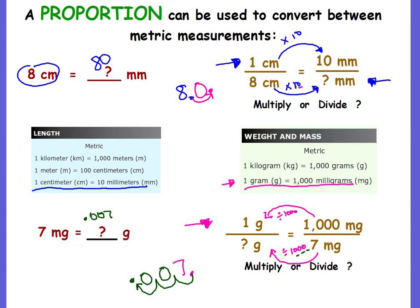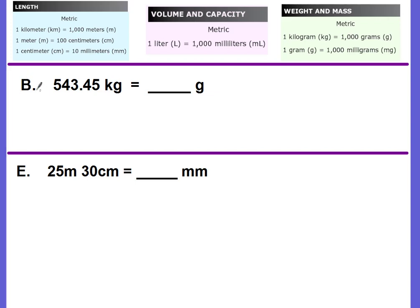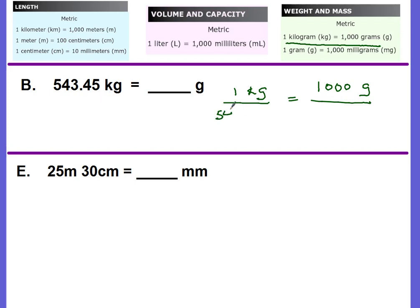Let's do some practice. We're converting kilograms to grams — that's under mass. Which one is larger? Kilograms. The unit rate tells us one kilogram equals 1,000 grams, so write that as the top of your proportion. The bottom: we know there are 543.45 kilograms, so that goes under kilograms, and we're looking for how many grams. We're going from the known kilograms to the unknown grams — left to right — increasing, so we multiply by 1,000.